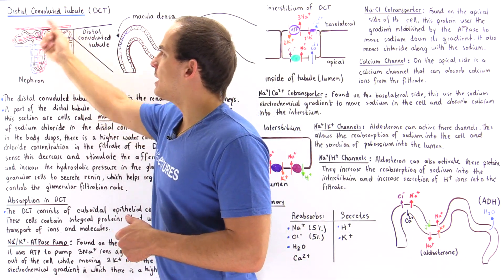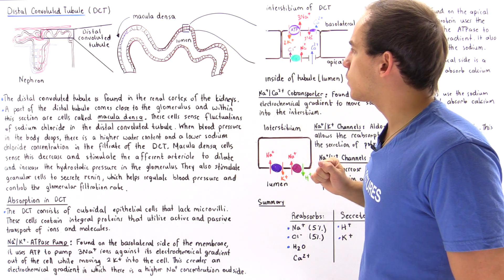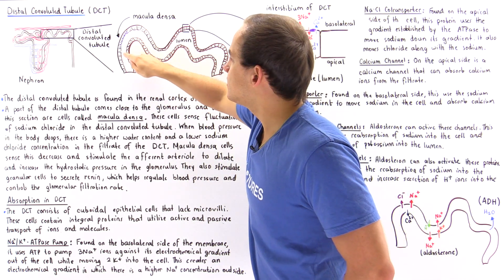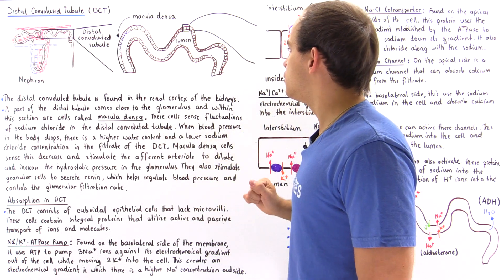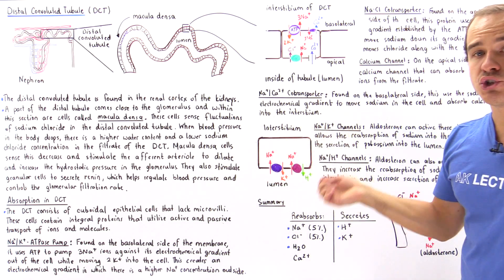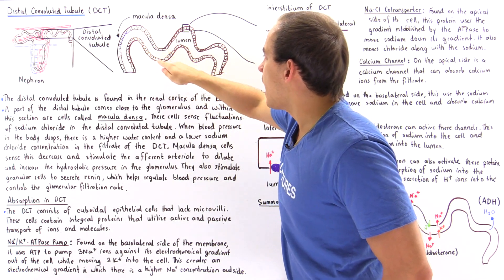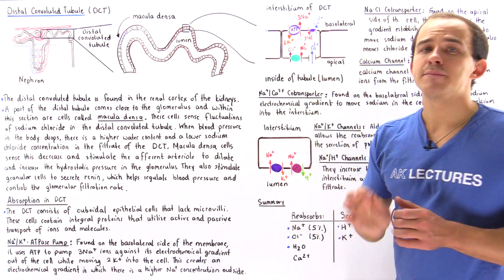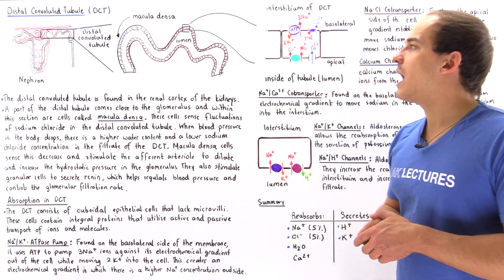If we zoom in on the distal convoluted tubule we get a cross-section diagram. The inside cavity is the lumen of our distal convoluted tubule. Everything outside is our surrounding tissue, also known as the interstitium. There are two types of cells we should be familiar with that line the distal convoluted tubule.